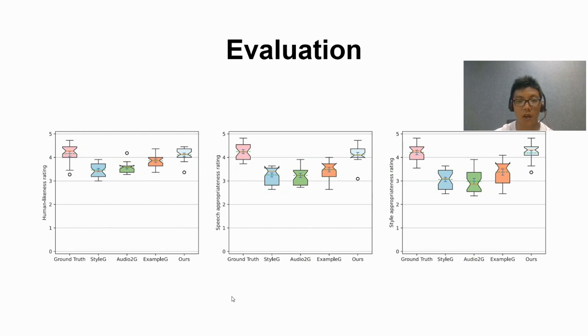The main subjective scores on human-likeness, speech appropriateness, and style appropriateness are reported in the figure. Our method significantly surpasses the compared state-of-the-art methods with human-likeness, gesture-speech, and gesture-style appropriateness, and even produces competitive results with ground truth in all three dimensions.